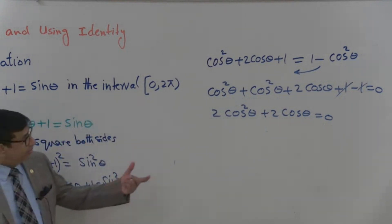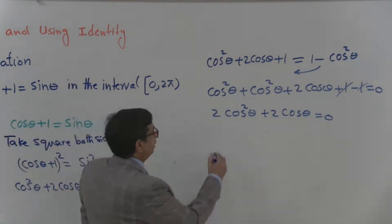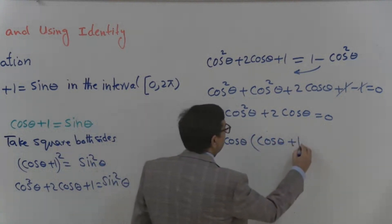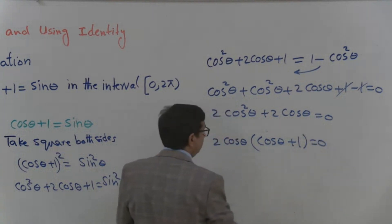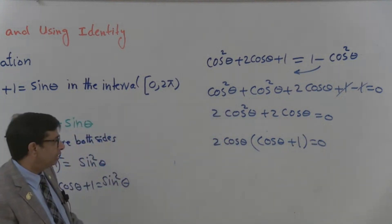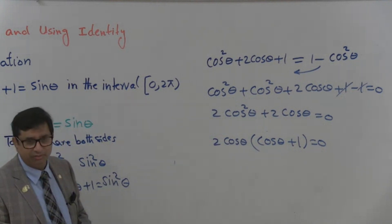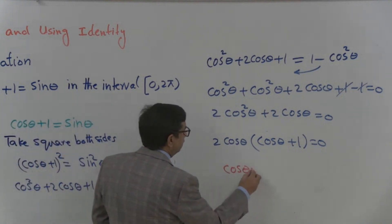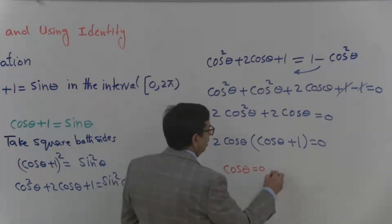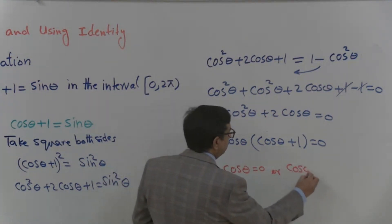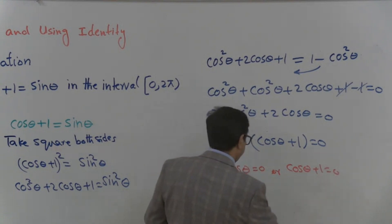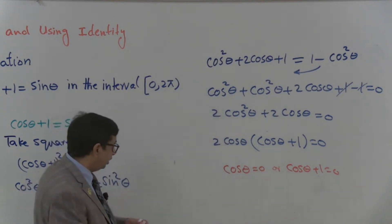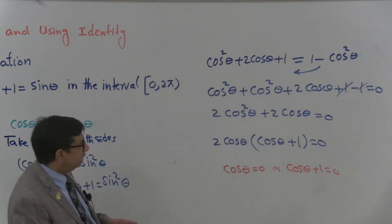Now we factorize. Factorization gives us two factors: cosine theta times (cosine theta plus 1) equals 0. So we have two equations: cosine theta equals 0, and cosine theta plus 1 equals 0.